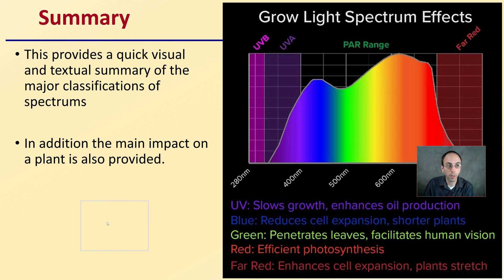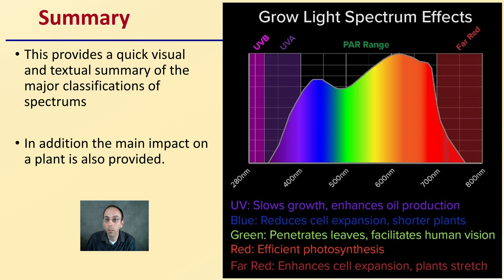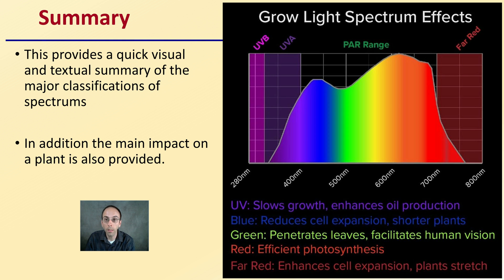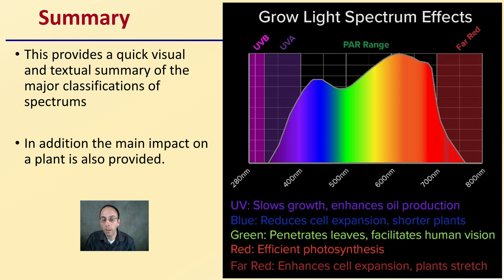Starting with a general summary, this provides a quick visual and textual summary of the major classifications of the different spectrums, along with the main impact on the plant. UV light can slow growth and enhance oil production in cannabis. Blue light can reduce cell expansion and cause plants to be shorter. Green light penetrates leaves and facilitates human vision and diagnosis of plant diseases or potential nutrient deficiencies. Red light is very efficient for the photosynthetic process, and far red light can enhance cell expansion and cause plants to stretch. If you give plants blue and far red, you have some competing effects — one keeps plants short and stocky, the other causes stretch. The proportions of these wavelengths you give a plant can impact its morphological outcome.